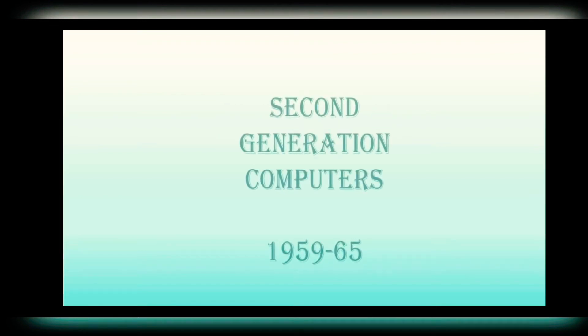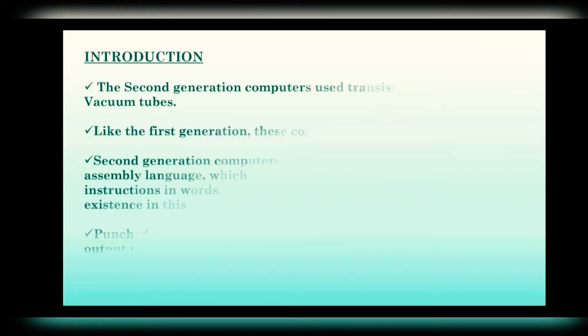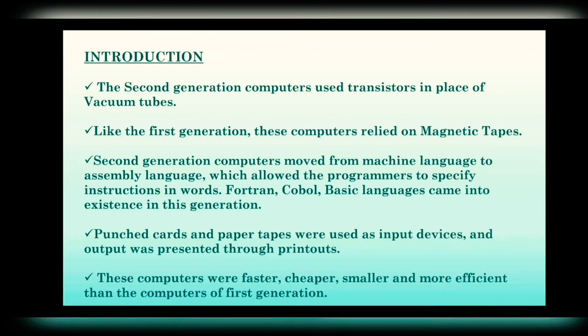Today we will discuss about the next generation, or the second generation of computers. The time period of this generation is from 1959 to 1965. The second generation computers used transistors in place of vacuum tubes. Like the first generation, these computers also relied on magnetic tapes.